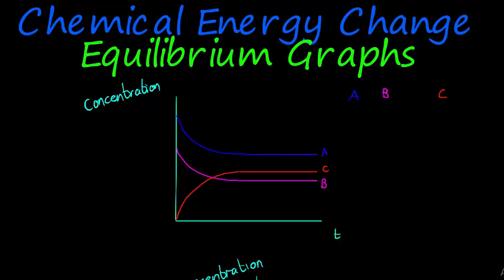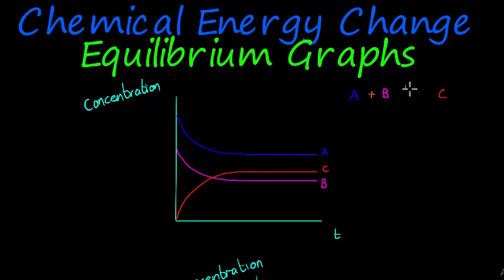How do I know this is a reversible reaction? Well, if one of the products went down to zero it means that product was completely used up and not produced again — so it couldn't have been reversible. But since neither A nor B go down to zero, and yet C isn't increasing until one of them is used up, that is because C is decomposing back into A and B. So this is a reversible reaction.